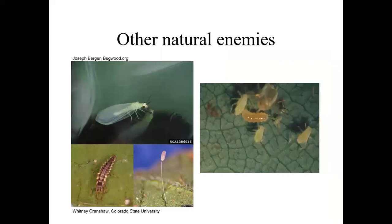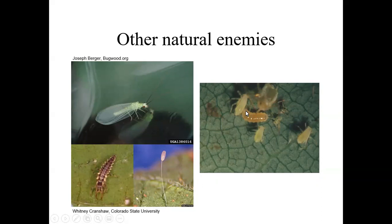We've got other natural enemies too. Lacewings are quite beautiful — you'll see their eggs laid on a single stalk sticking up out of the plant. Then there's the lacewing larva. Also, this gruesome-looking maggoty creature is a Cecidomyia larva — a fly larva — and it's a voracious feeder that will suck the contents right out of an aphid and move on to the next one. All of these things can help keep aphid populations in check.